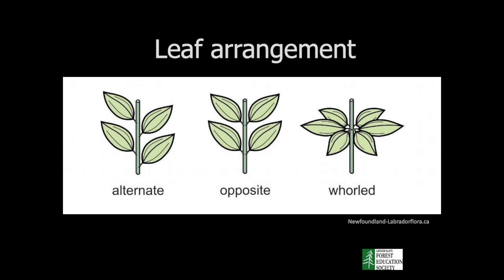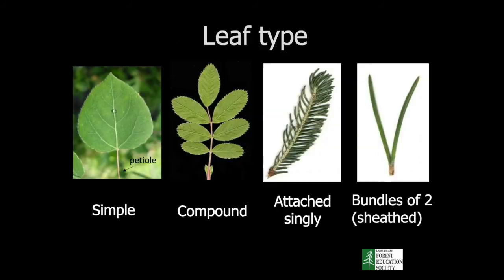We're going to start off by looking at leaf arrangement. In the boreal forest, the most common ways leaves can be arranged on a tree or shrub are opposite from each other, or arranged alternately along the branch. Our trees do not have whorled leaves, but many plants with whorled leaves are all around us in the boreal forest.